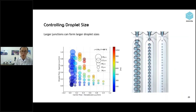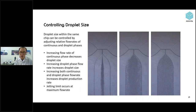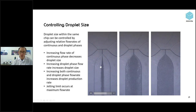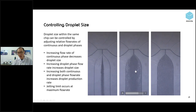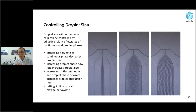For controlling droplet size, there are two main methods. The first is using different junction sizes — a larger junction forms larger droplets, a smaller junction produces smaller droplets. The second method is changing the flow rate ratio of the continuous and droplet phases within the same chip. Increasing the flow rate of the continuous phase decreases droplet size. Increasing the flow rate of the droplet phase increases droplet size. Increasing both simultaneously increases the production rate.